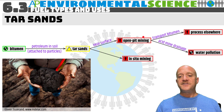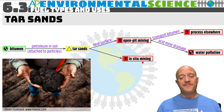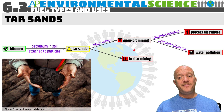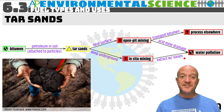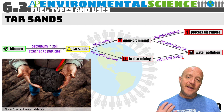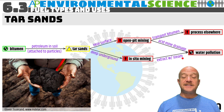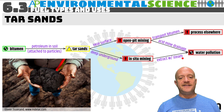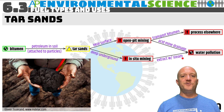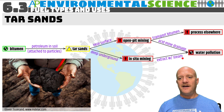You can also have in-situ mining, which is essentially on-site extraction used when the tar sands are much deeper underground. In this process, superheated steam is shot down underground, melting the petroleum and helping to remove it from the sand it is tightly bonded to. However, this process can lead to water pollution from the steam extraction.